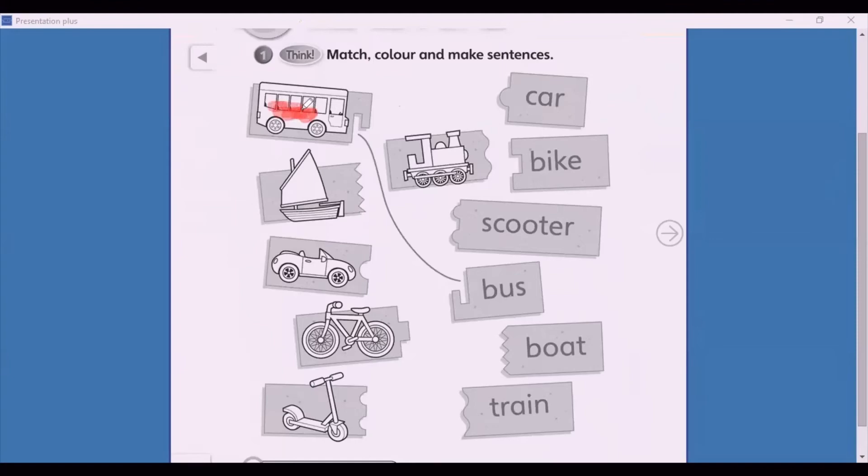And make sentences, so for example: bus, I'm driving a bus, or car, I'm driving a car. Okay, so make sentences. And the words are: car, bike, scooter, bus, boat, train. So match, color, and make sentences.